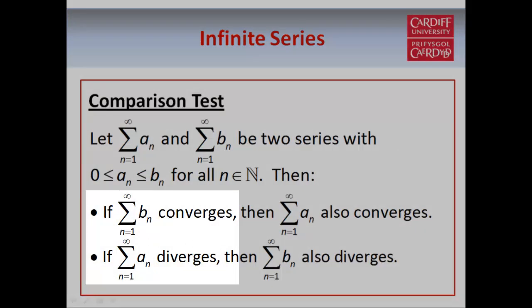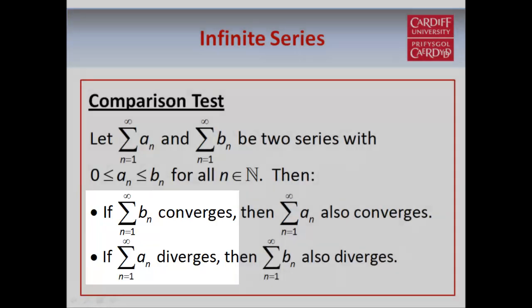Either the b_n series has to be convergent, or the a_n series has to be divergent, because if the a_n series converges, that doesn't enable us to say anything at all about the b_n series. And similarly, if the b_n series diverges, that doesn't enable us to say anything at all about the a_n series.